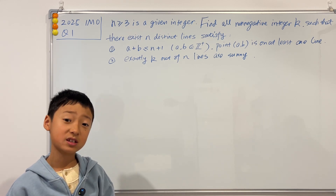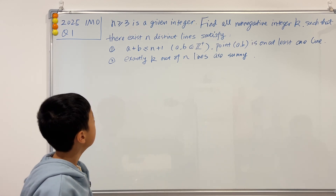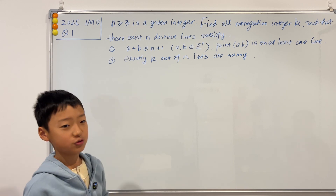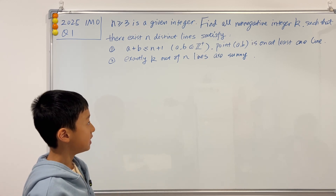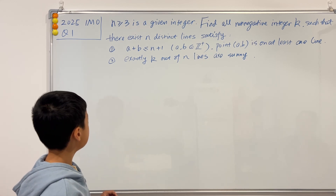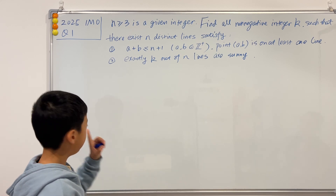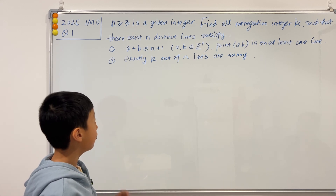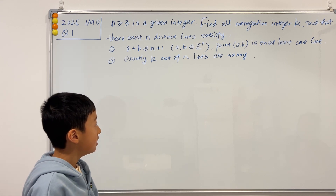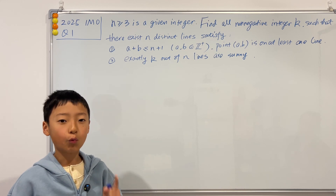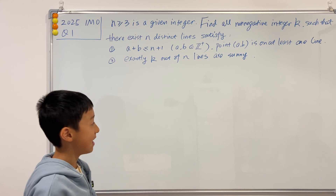Well, this question looks a bit scary, but it's okay, we'll go through it together. First, n greater than or equal to 3 is a given integer, and it's asking us to find all non-negative integers k, such that there exists n distinct lines that satisfy the first condition: a plus b is less than or equal to n plus 1, and a and b are positive integers, and the point (a, b) is on at least one line. Second condition: exactly k out of n lines are sunny.